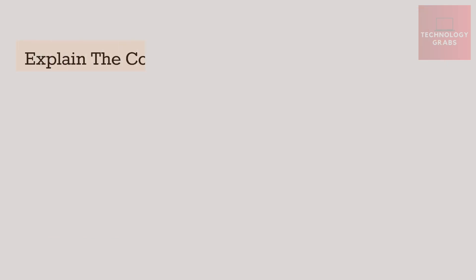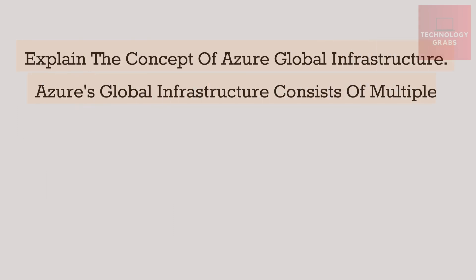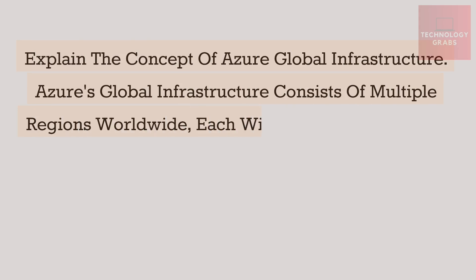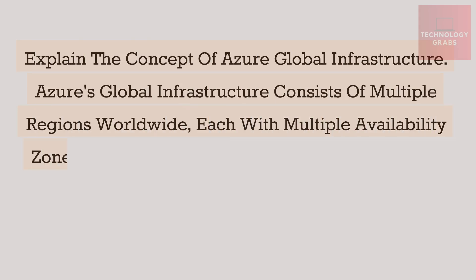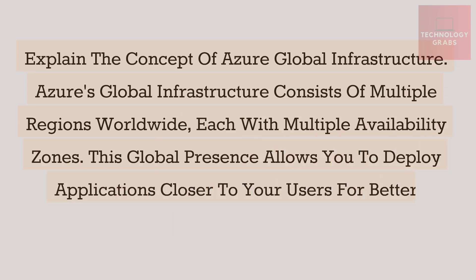Explain the concept of Azure Global Infrastructure. Azure's global infrastructure consists of multiple regions worldwide, each with multiple availability zones. This global presence allows you to deploy applications closer to your users for better performance.